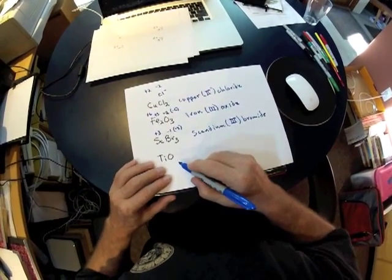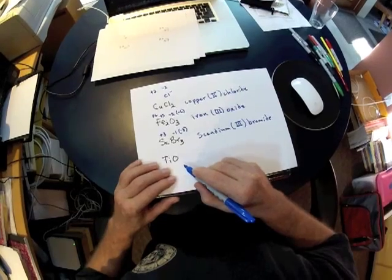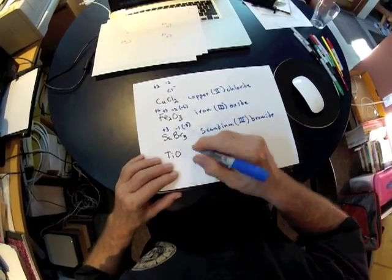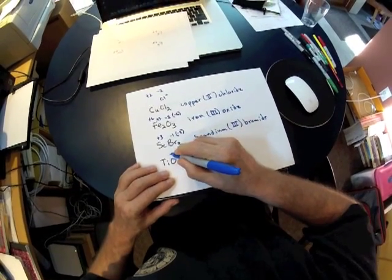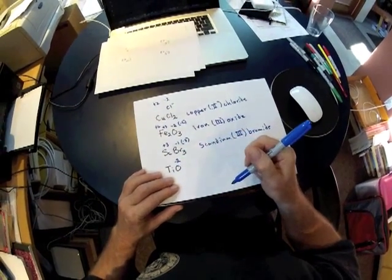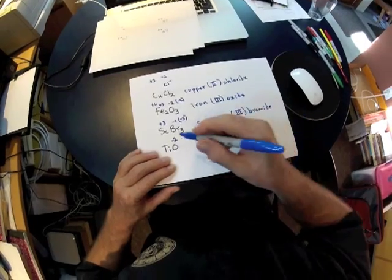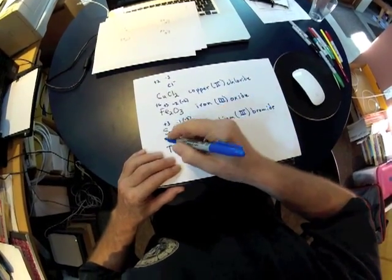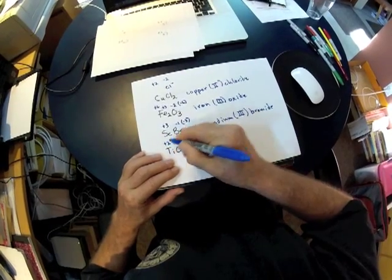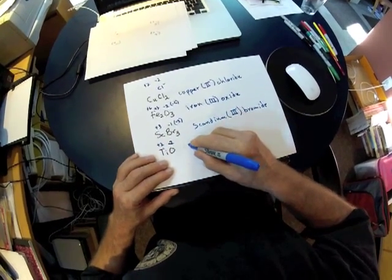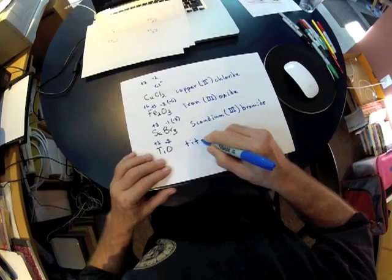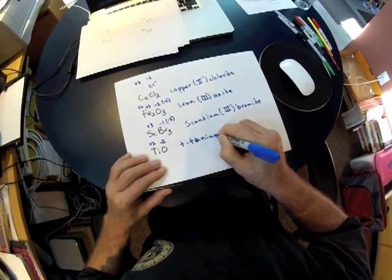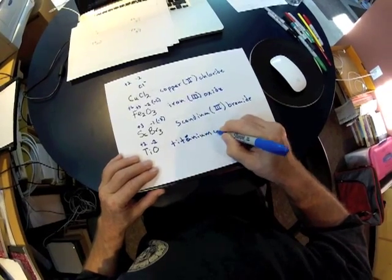Lastly, we have a compound where titanium has been combined with oxygen. We know that oxygen is in group 6A, and the charge on the group 6A anion is minus 2. Since the titanium and the oxygen need to sum to 0, that means the charge on the titanium needs to be plus 2. So the correct name of this compound is going to be titanium 2 oxide.